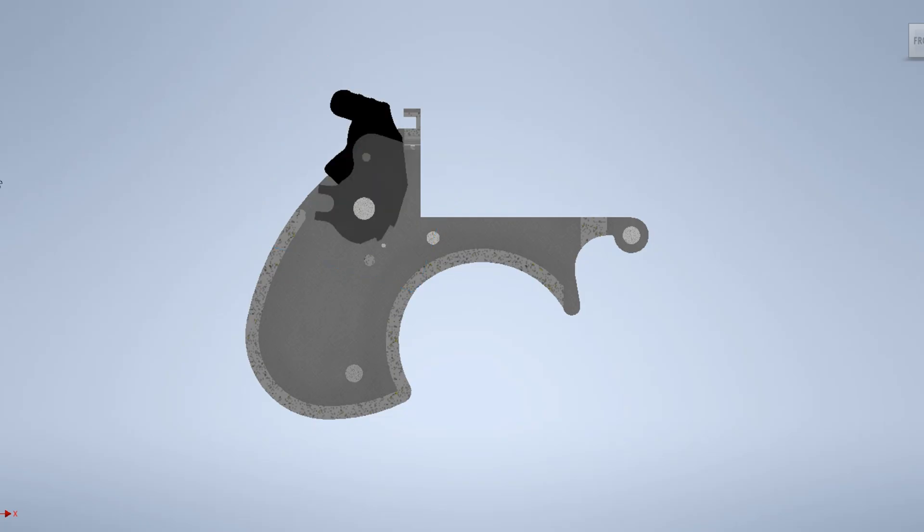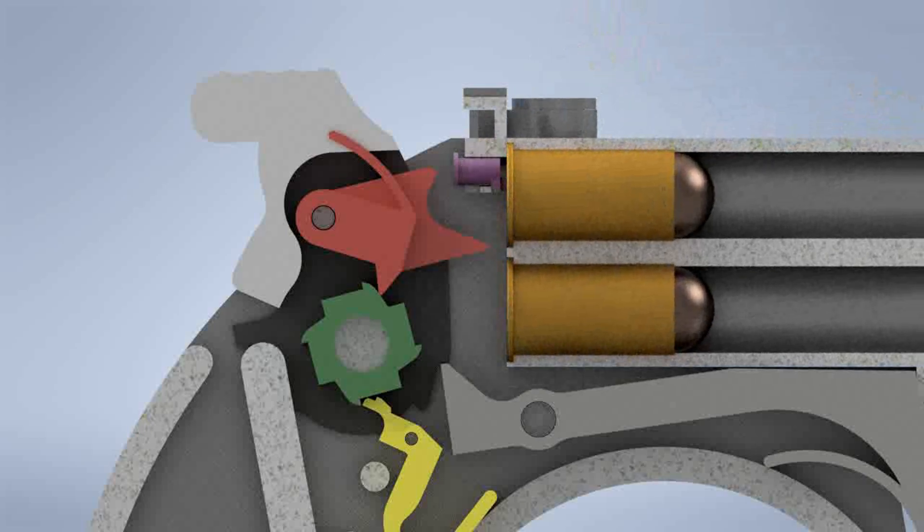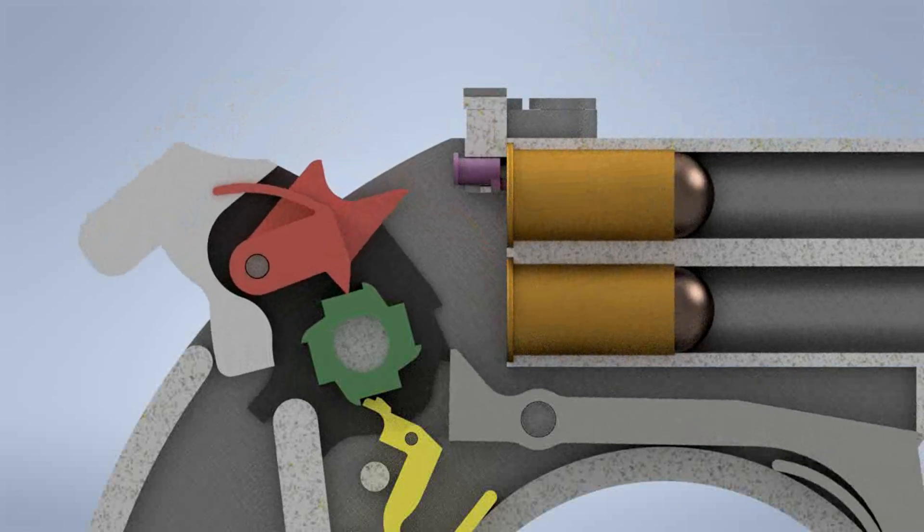First, let's design the frame and hammer mechanism. The hammer mechanism works by rotating the red firing pin over the green ratchet as the hammer is cocked. This rotation switches the firing pin between the two barrels.